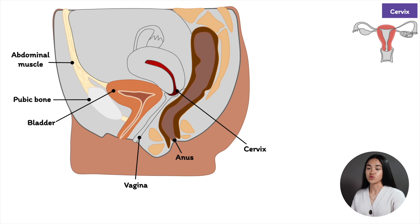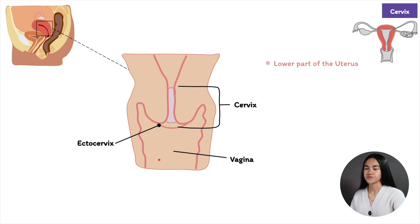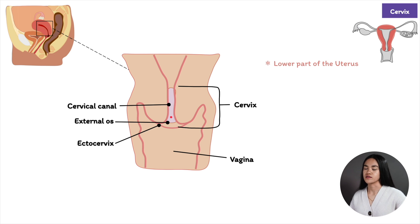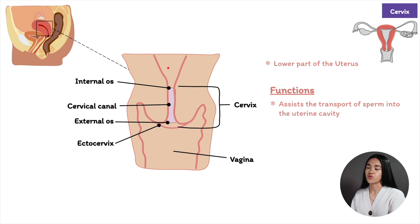The cervix is the lower portion of the uterus and connects the vagina with the body of the uterus. The cervix consists of two regions: the ectocervix, which leads to the vagina and contains an opening called the external os; and the endocervical canal, or endocervix, which is the inner part of the cervix leading into the uterus. There is a narrowing called the internal os that leads to the main body of the uterus.